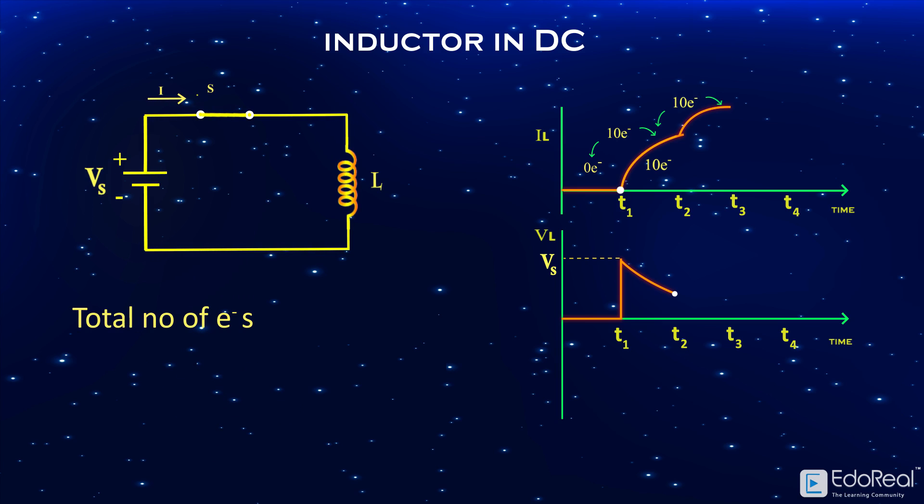So the total number of electrons flowing in the circuit should be 20, that is, 10 electrons rise in t2 to t3 in addition to 10 electrons in t1 to t2. But now at t2, the inductor voltage is not zero. So the rise in current will be decreased. That is, between t2 and t3, the rise in electrons is 8 instead of 10 electrons.